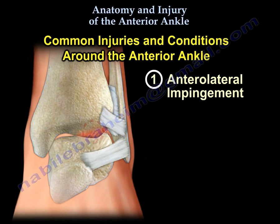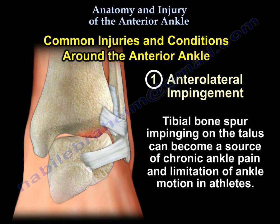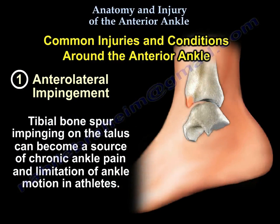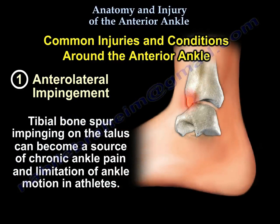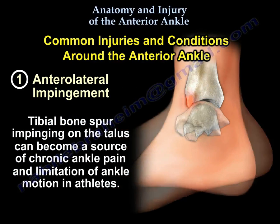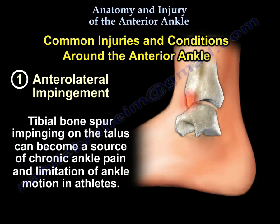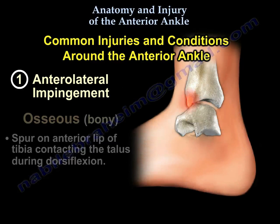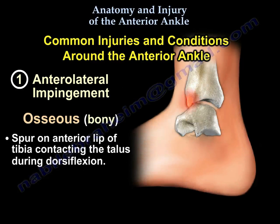This type of impingement may also be bony. A tibial bone spur impinging on the talus can become a source of chronic ankle pain and limitation of ankle motion in athletes. An osseous or bony spur on the anterior lip of the tibia contacts the talus during dorsiflexion.